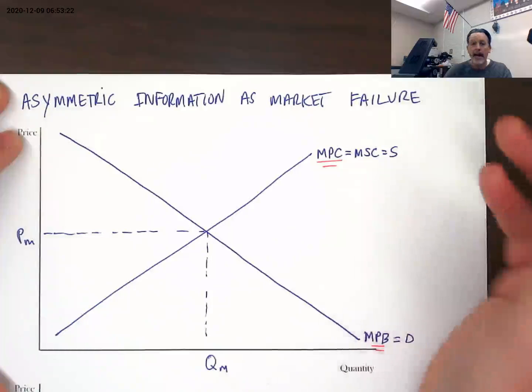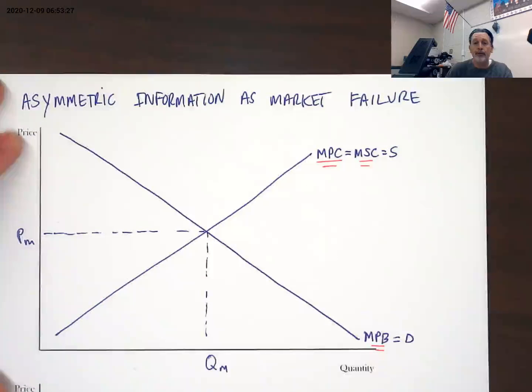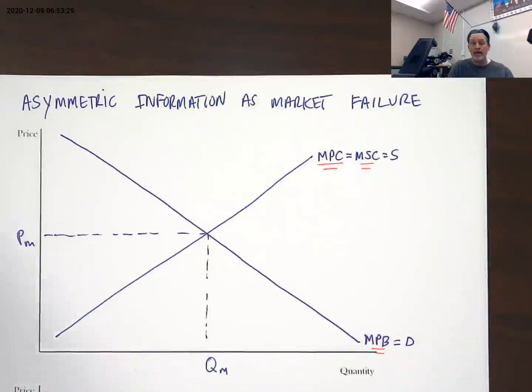That information which is held by the seller means that the private cost and the social cost are pretty much exactly the same. Everything the seller knows about the car is the social cost and the private cost combined. The downside in that case is that the buyer of that car doesn't have all of that information.